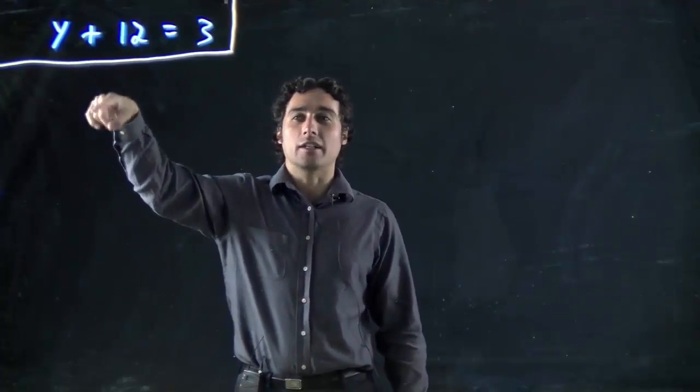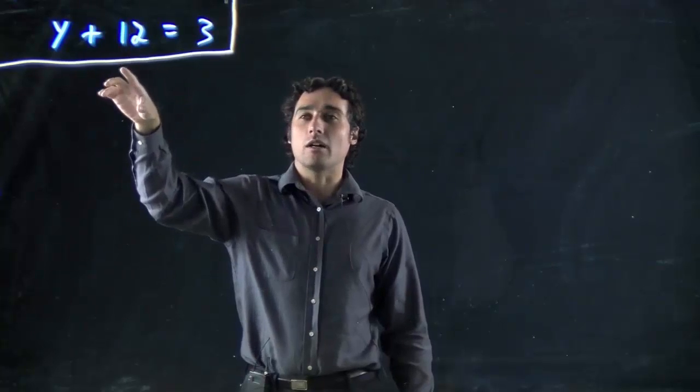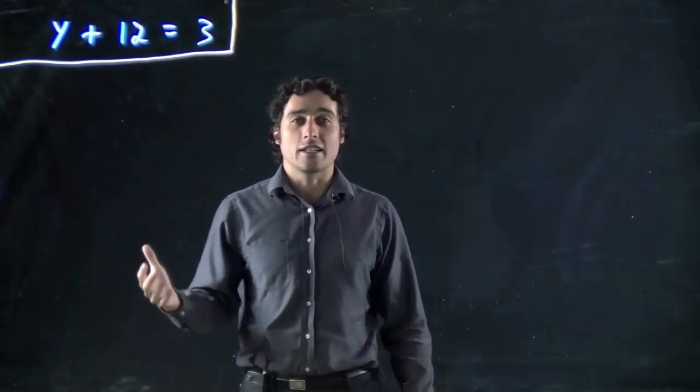Now remember, you always want to get the variable on its own. We're solving for the variable. And to get rid of the 12, we have to do the opposite. Remember, in this case, if we start with addition, we're doing subtraction to get rid of it.